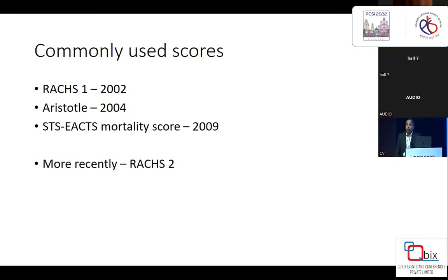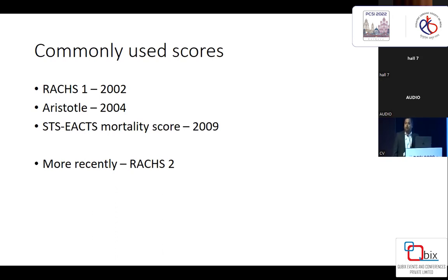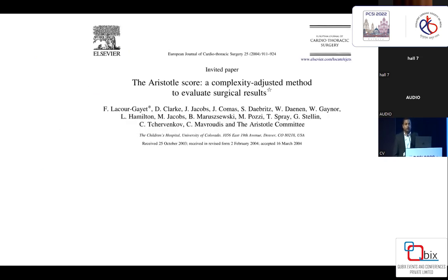What are the commonly used scores? There are many scores, but the more popular ones are the RACS score, the Aristotle score, and the STS-EACTS score, which is known as the STAT score. These are probably the more important tools used for risk stratification. There is also a RACS 2, which still needs more validation.